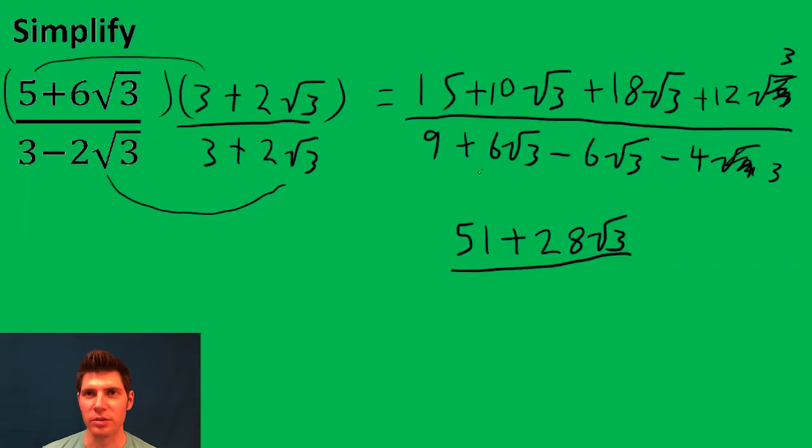For the bottom, these cancel. 6 root 3 negative 6 root 3 cancel. 9 minus 12 is negative 3.